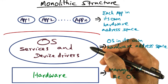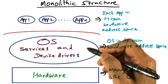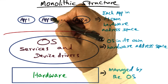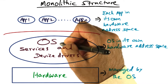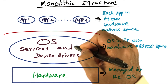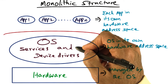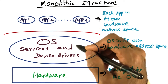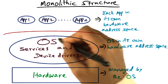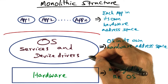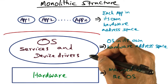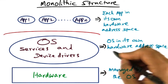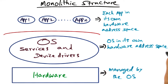The OS itself is a program providing entry points for the applications for the services that are expected by the applications. And the code and the data structures of the operating system are contained in its own hardware address space.